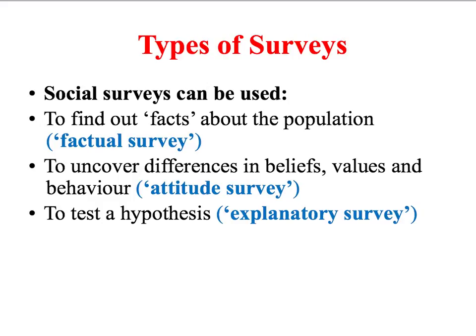A second type of survey design is what we call an attitude survey. This is similar to a factual survey, but the focus is much more on the opinions of the population on a particular issue. A good example would be political opinion polls published regularly in the run-up to a general election. The third type is an explanatory survey, which sets out to test a particular theory or hypothesis. A good example is the work of Douglas and Halsey, who each tested the theory that underachievement could be related to material deprivation using a survey method.